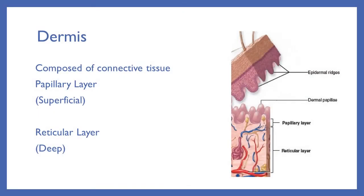That completes the epidermis. Now we can see what's underneath. The dermis is composed of connective tissue. It has a papillary layer, which is the upper, more superficial layer, and the reticular layer, which is deep and forms the vast majority of the dermis. The papillary layer is where we have those finger-like extensions — the dermal papilla.